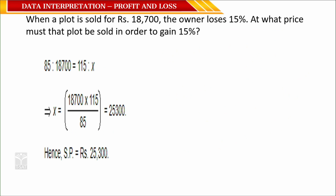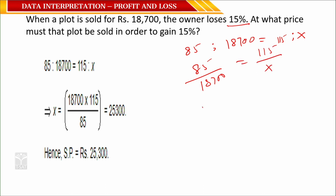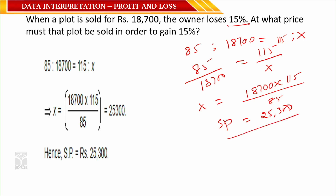Question 10: When a plot is sold for 18,700 rupees, the owner loses 15%. At what price must the plot be sold to gain 15%? 85 corresponds to 18,700; 115 corresponds to x. So x = 18,700 × 115 / 85 = 25,300 rupees.